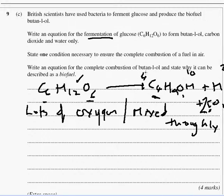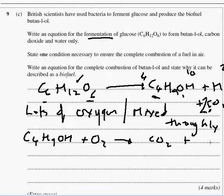Right, equation for the complete combustion of butane-1-ol and state why it can be described as a biofuel. Alright, we'll go to C4H9OH. I'm going to burn it, so it's complete combustion with O2, and we're going to form carbon dioxide and water. So straight away, carbon dioxide, we're going to need four of them. Water, well we've got ten hydrogens here, so we need five water molecules. Now we can deal with the oxygens.